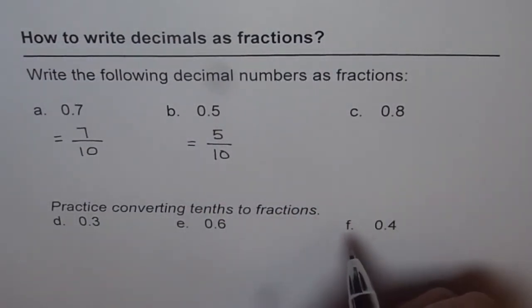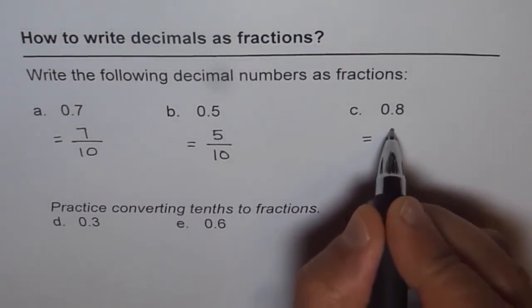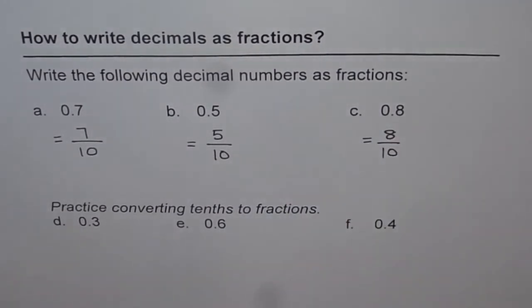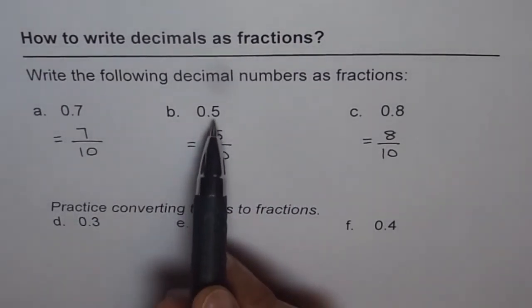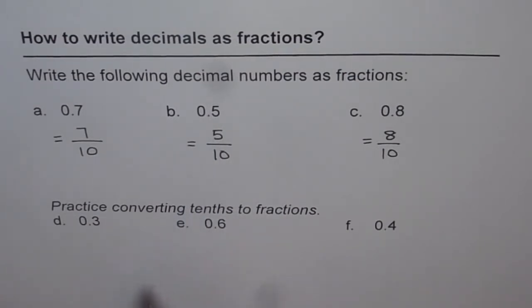How about 0.8? 0.8 is eight tenths. So I can write this as eight out of ten. So that is how you write the decimal numbers in tenths as the number in the numerator and ten in the denominator. And you get your fraction.